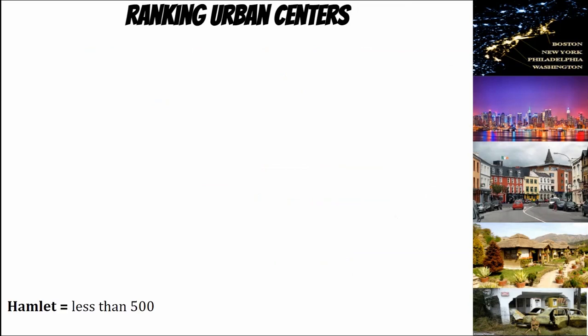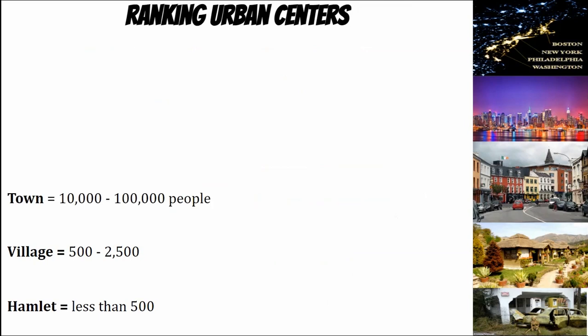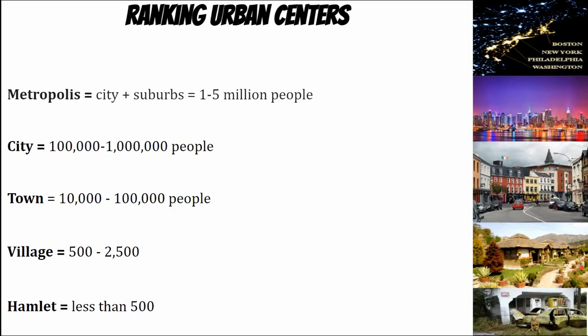A hamlet has less than 500 people and not a lot of functional regions going on. A village has between 500 to 2,500 people — these aren't exact numbers, just approximations. Where we live right here in Duluth is a town — between 10,000 and 100,000 people. Above that is a city at 100,000 to a million. Then a metropolis, which is the city plus its surrounding suburbs. And then a megalopolis has 10-plus million people, generally connecting multiple metropolises together using urban sprawl.